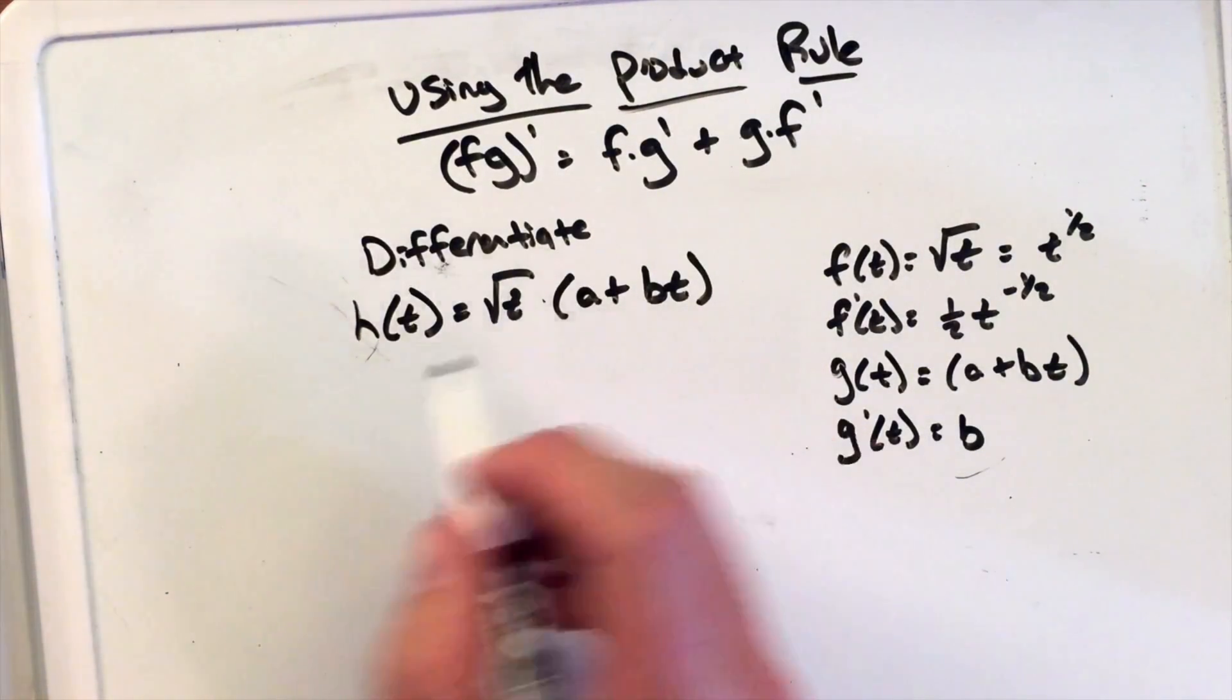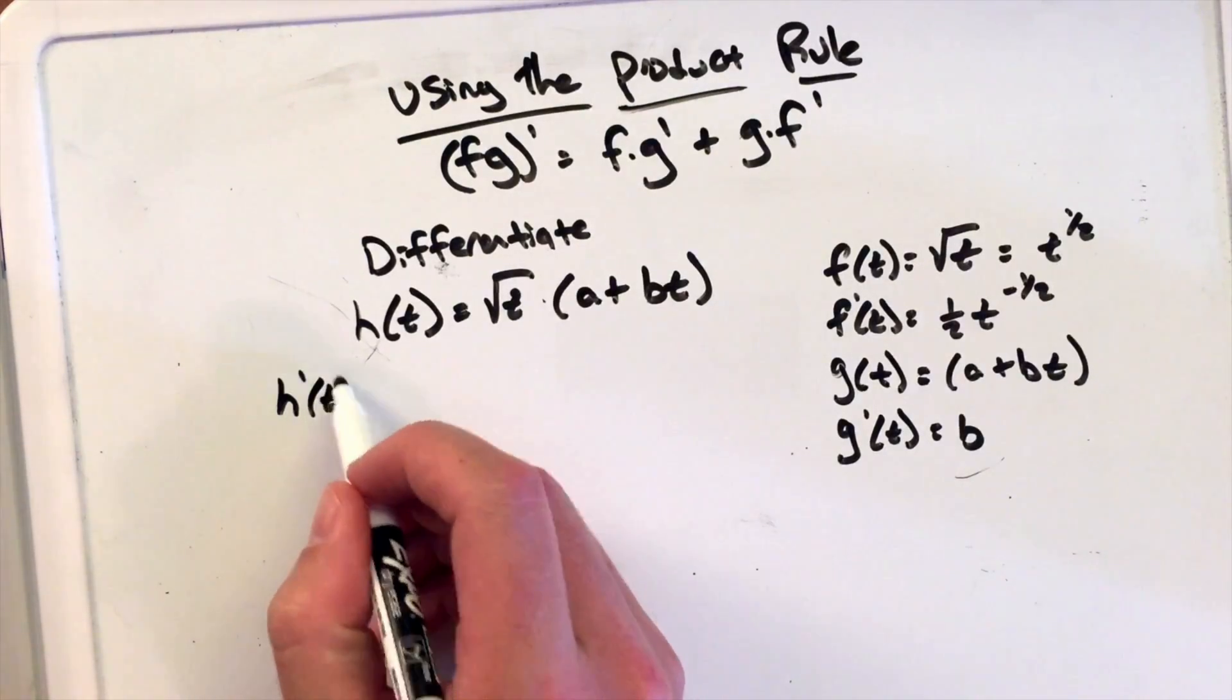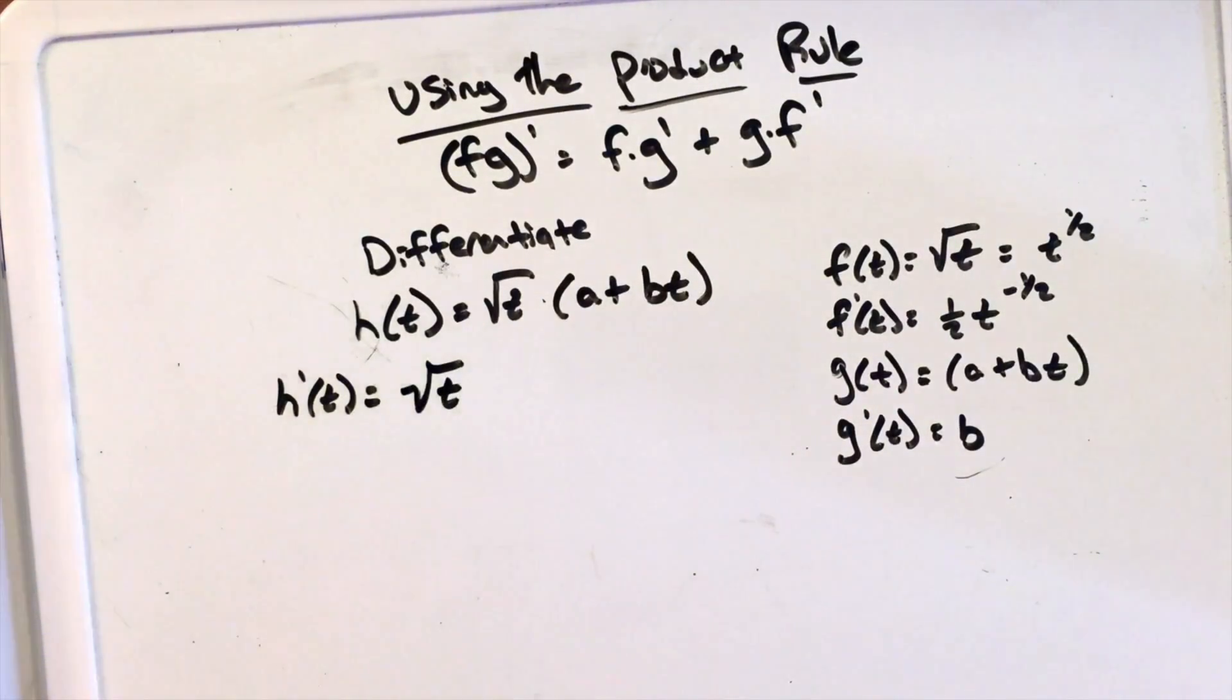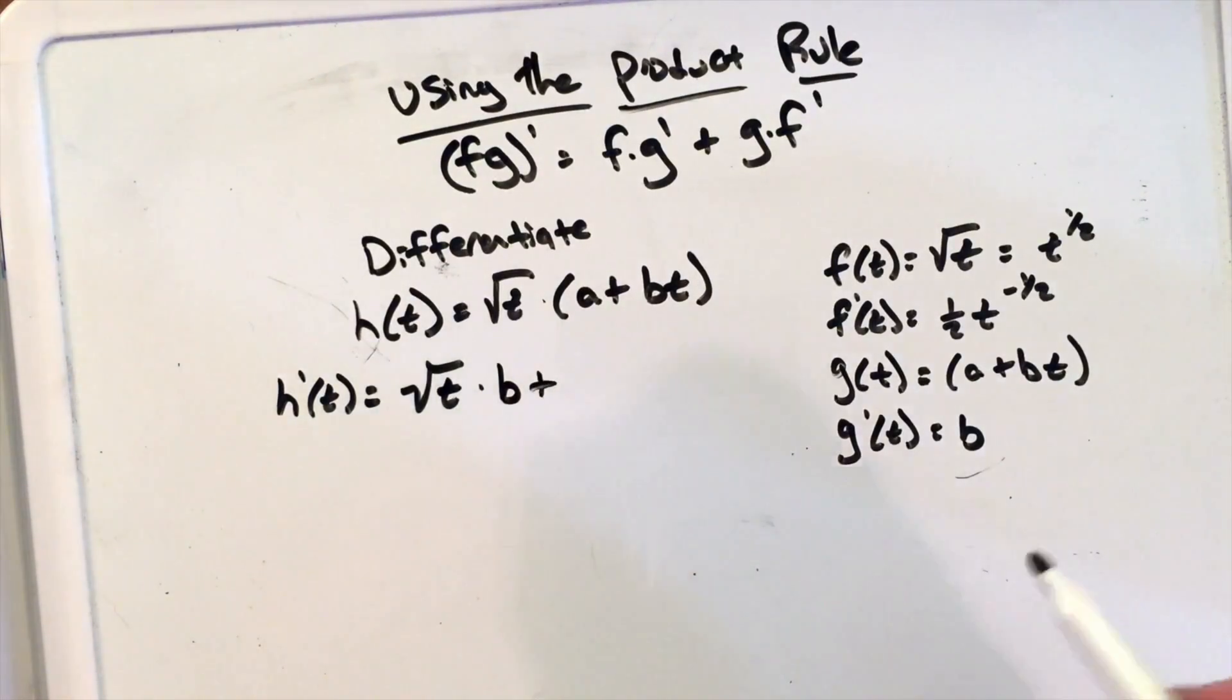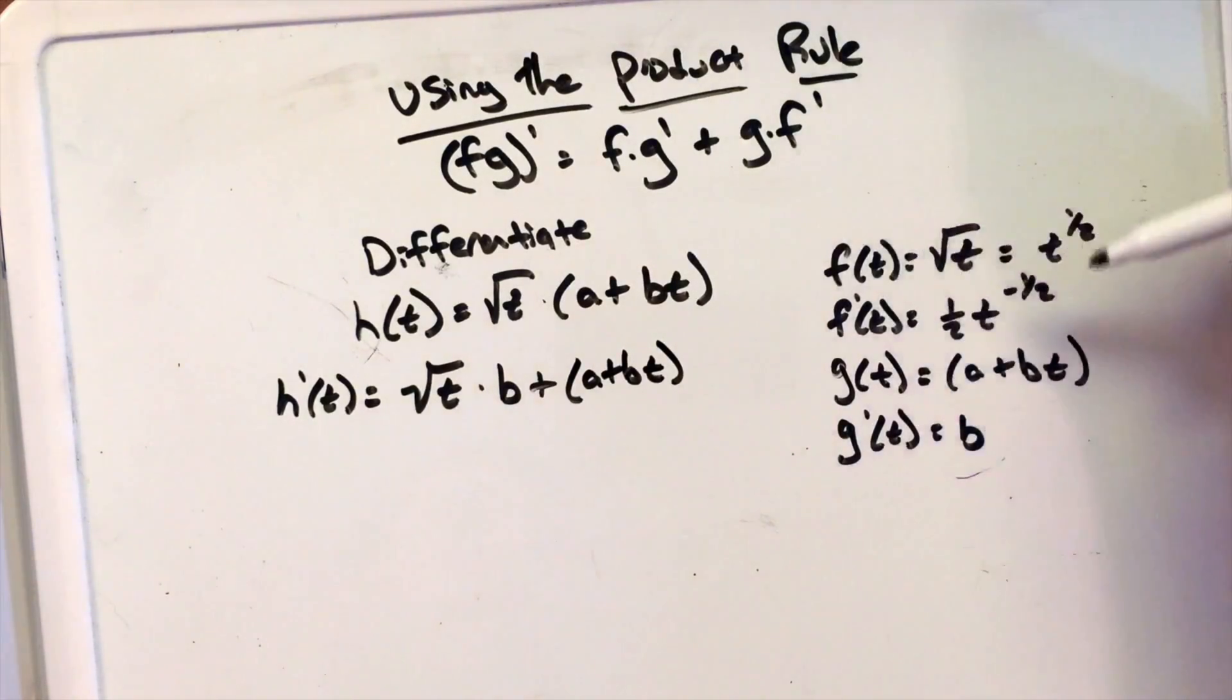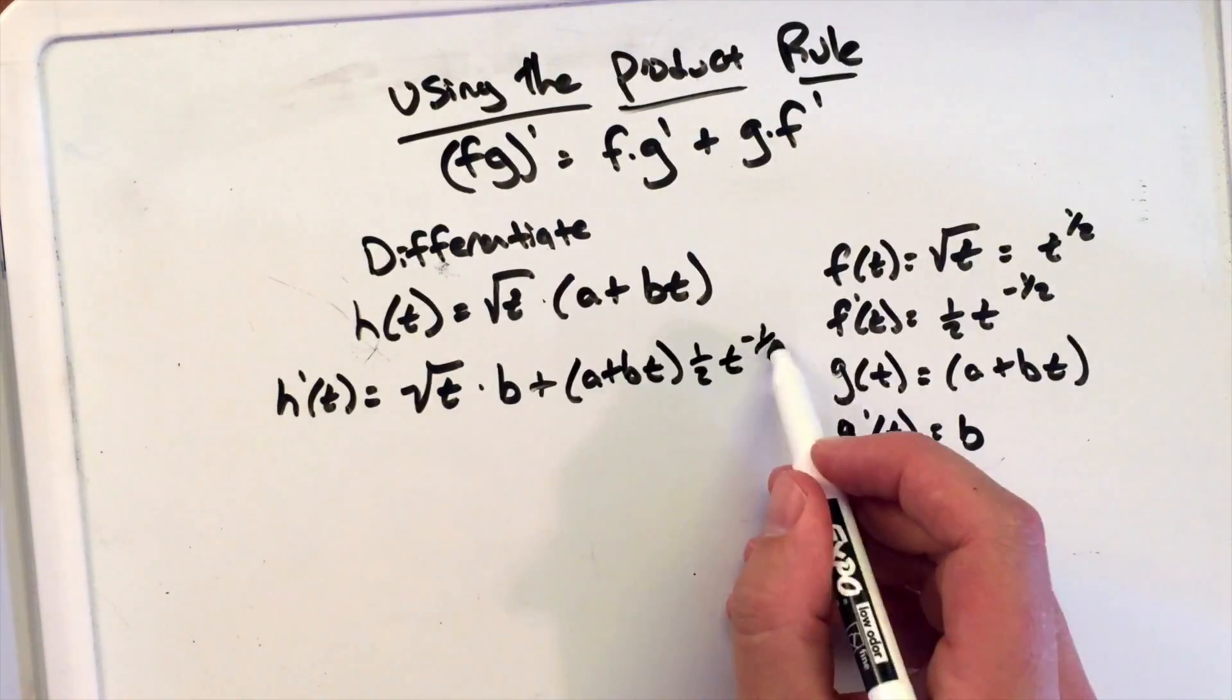So if I'm going to follow the product rule, h prime of t equals our first part, f of t, which is square root of t, times g prime, which is b, plus g, a plus bt, times f prime, which is one-half t to the negative one-half power.